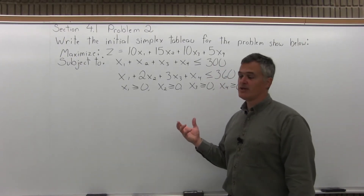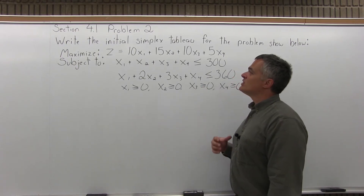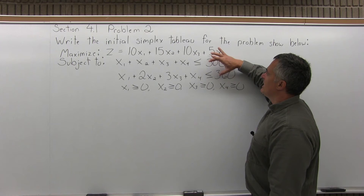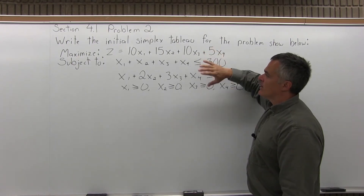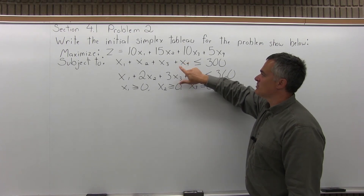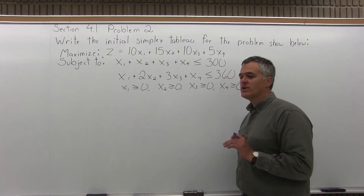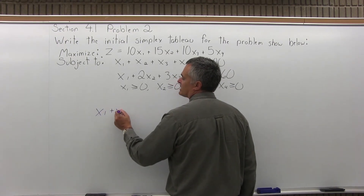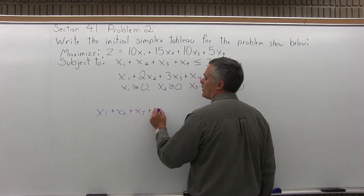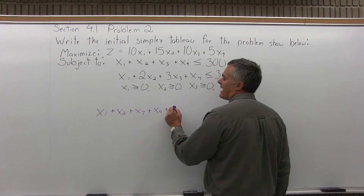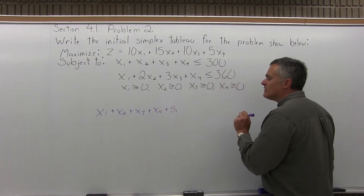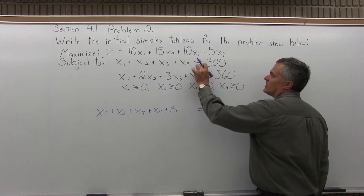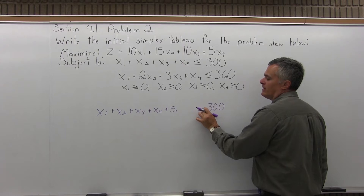Writing the initial simplex tableau essentially means changing this into a matrix. A matrix is a group of equations, but we have linear inequalities. So I'm going to focus on my first constraint, x1 plus x2 plus x3 plus x4 is less than or equal to 300, and convert it from a linear inequality into a linear equation by adding a slack variable s1, making it x1 plus x2 plus x3 plus x4 plus s1 equals 300.